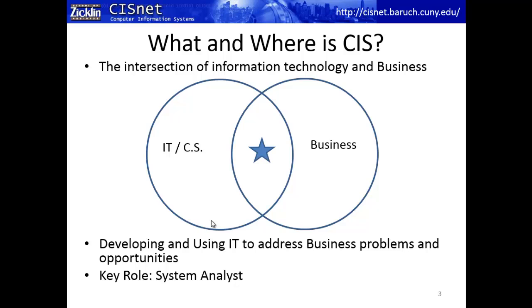If you have a business problem — maybe information is not being collected in an appropriate way, or there are errors in the way data is collected, or the business is not operating efficiently because of a lack of support or automation — IT is going to be there to try and address those business challenges and opportunities. This is where computer information systems comes into play: recognizing a problem or opportunity, and determining what IT resources to put into play to address them.